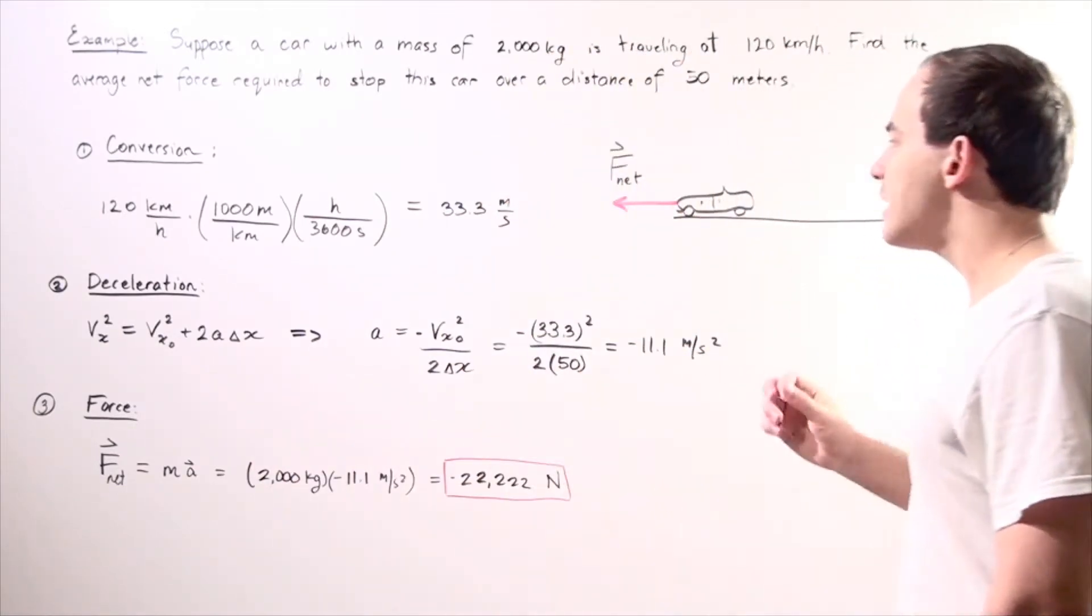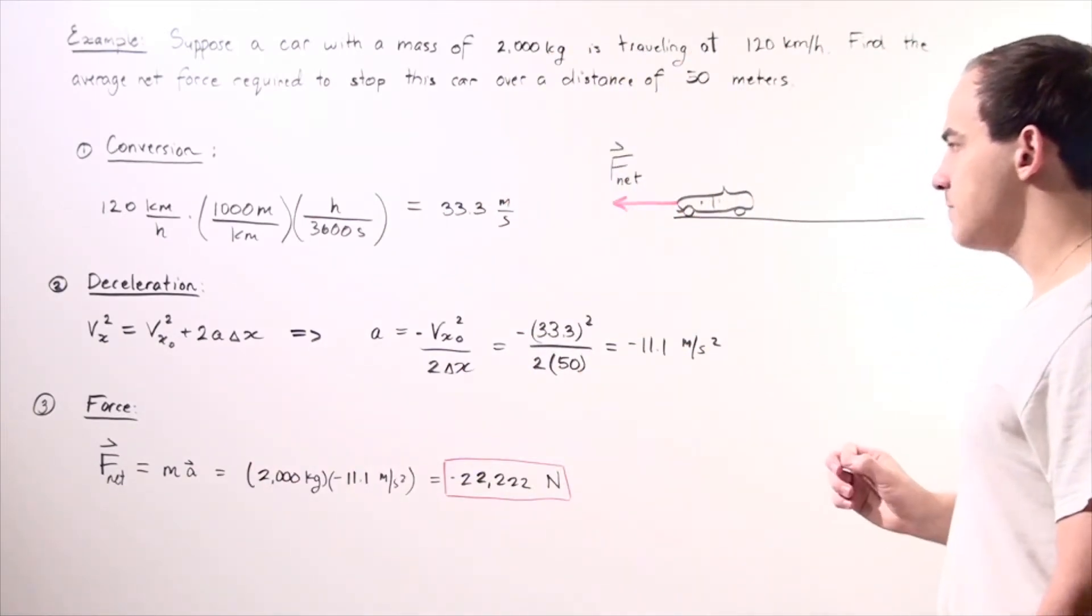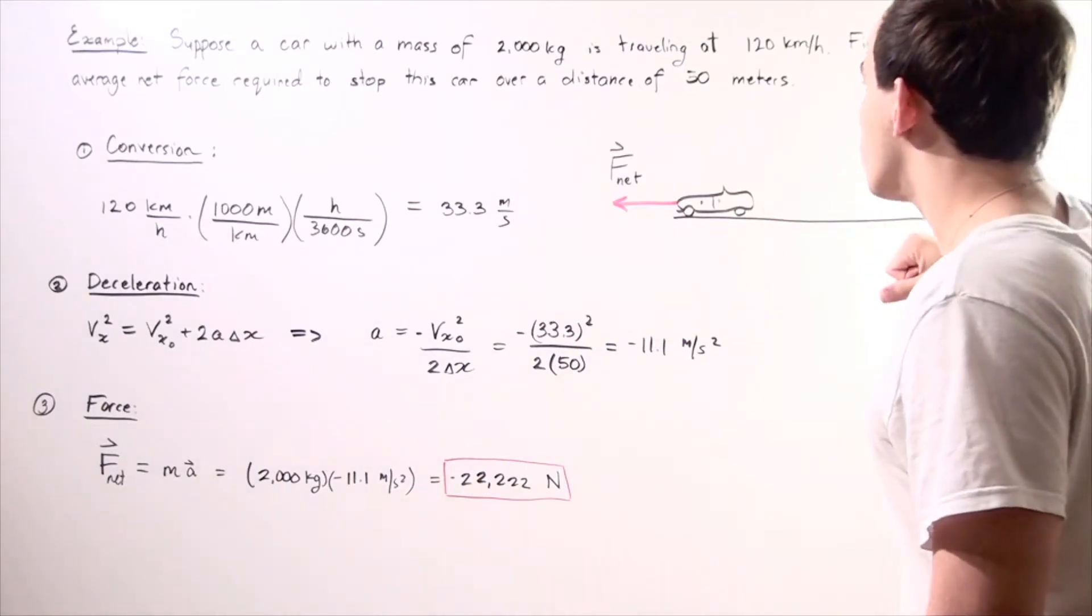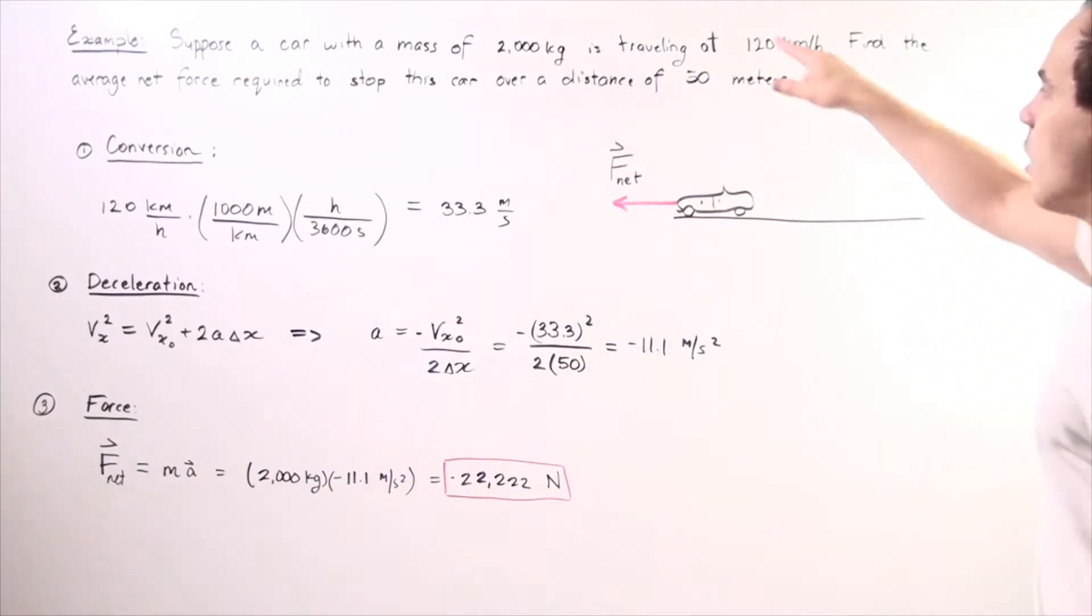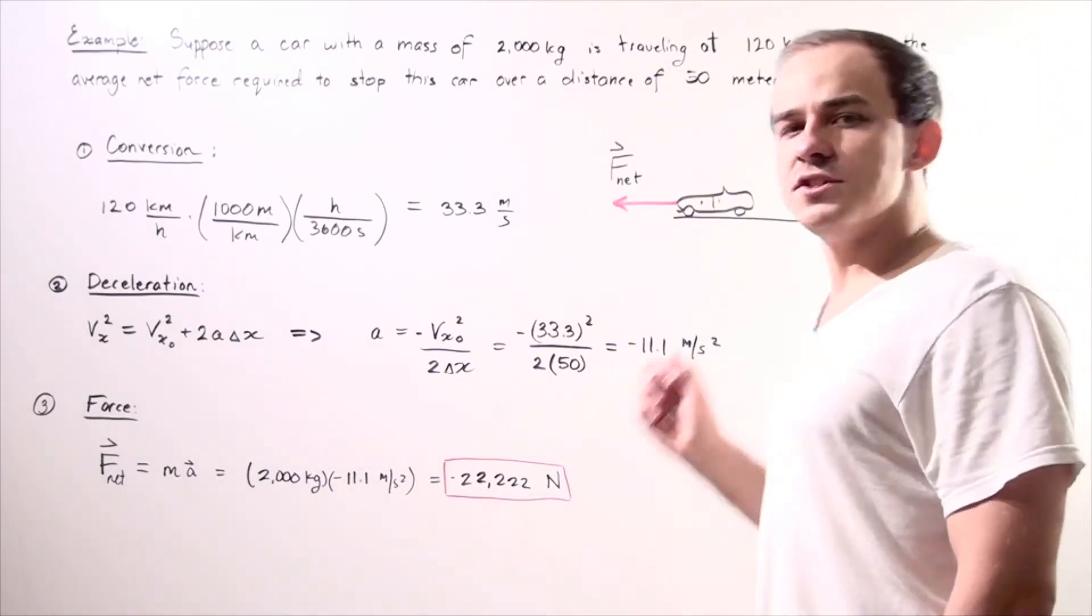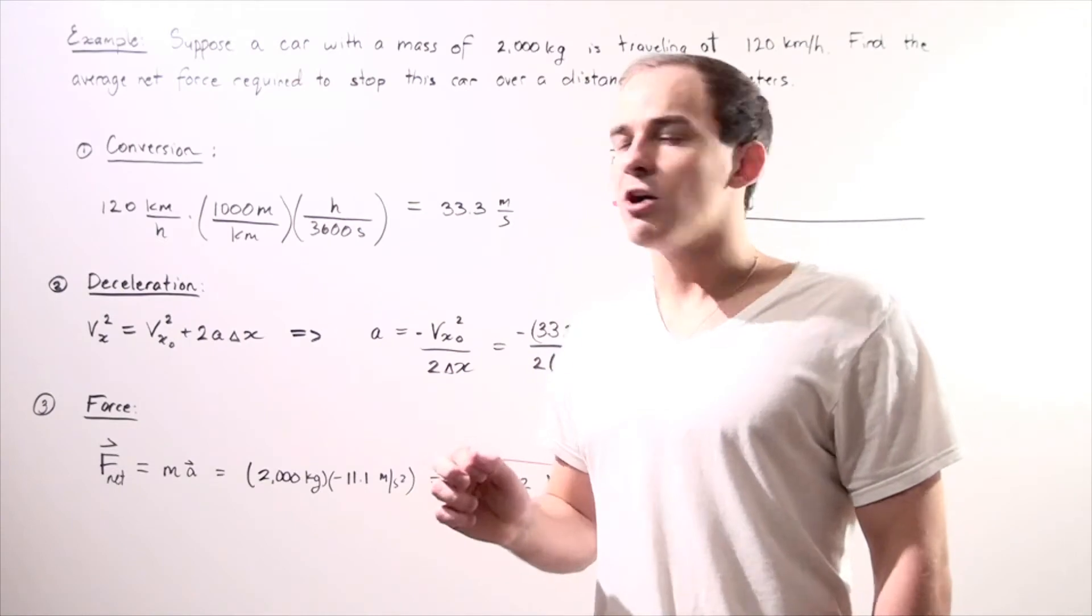So we want to find what our net force should be to stop this car over a distance of 50 meters, from an initial velocity of 120 kilometers per hour to a final velocity of 0 kilometers per hour.